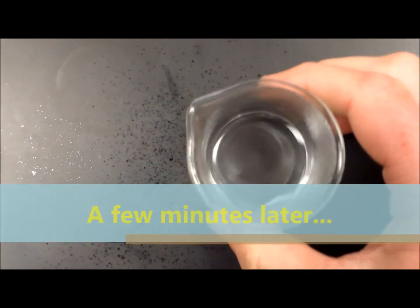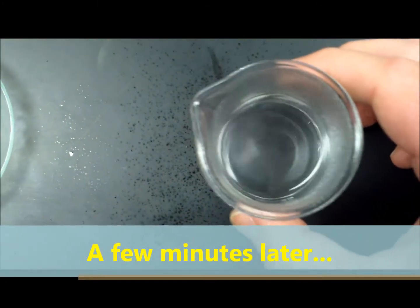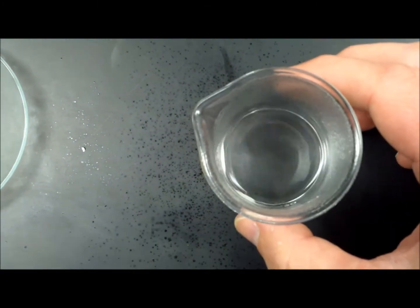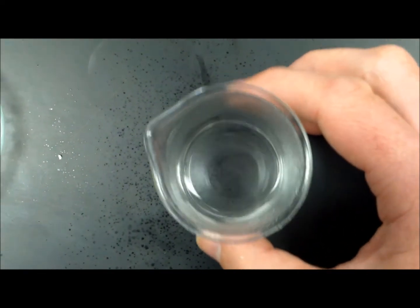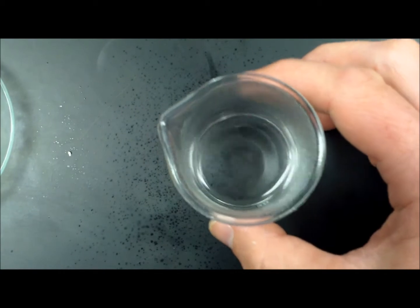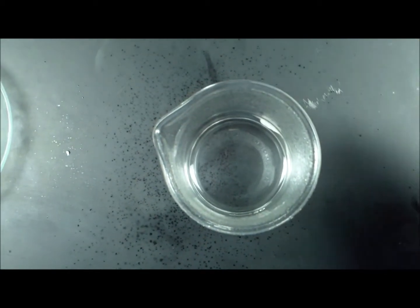So this reaction is almost done, but I can see that there's a little bit of magnesium ribbon just floating near the top. You can see it moving around on the surface there. So I want to just give this a little bit of a swirl to move around the liquid and move that magnesium just to encourage the reaction to go to completion.